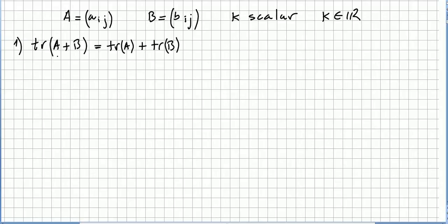Point number one: the trace of A plus B is equal to the trace of A plus the trace of B. So the trace of adding two matrices is the same as getting the trace of the first one and adding the trace of the second one.